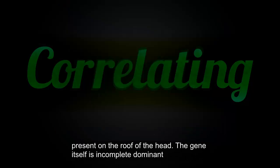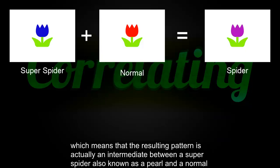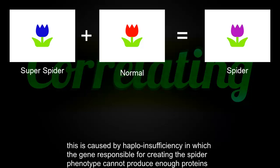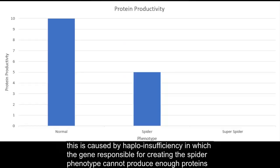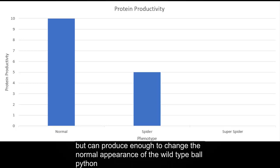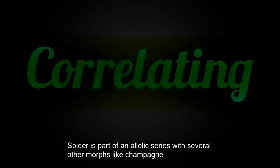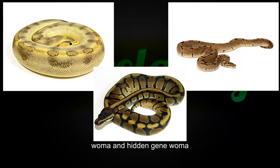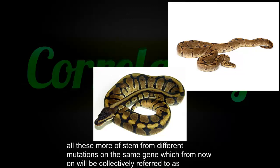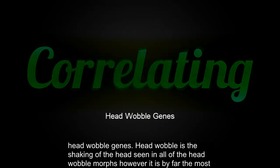The gene itself is incomplete dominant, which means the resulting pattern is actually an intermediate between a super spider — also known as a pearl — and a normal. This is caused by haploinsufficiency, in which the gene responsible for creating the spider phenotype cannot produce enough proteins to complete the full dominant phenotype on its own, but can produce enough to change the normal appearance of the wild type ball python. Spider is part of an allelic series with several other morphs like champagne, woma, and hidden gene woma.